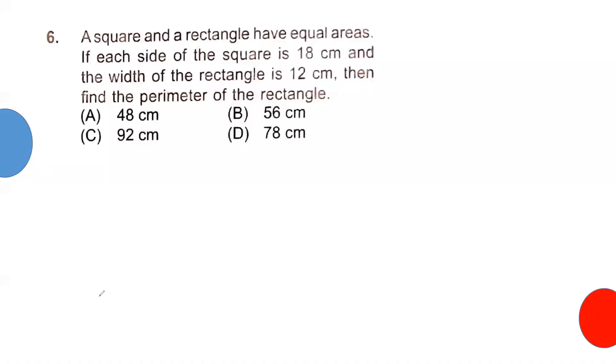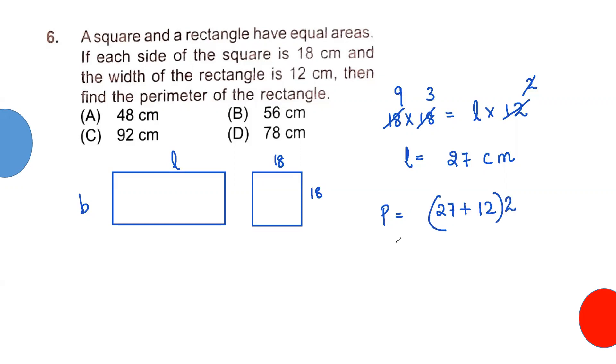See this question again. Here we have a rectangle and a square with equal area. That means 18 times 18 is the area of the square. Suppose this is L, this is B. Width is given as 12. So let's take it 12 and then find L. L will be 6 times 3 after cancelling - we got 27 centimeter. So perimeter is 27 plus 12 times 2. Perimeter will be 2 times 39, that is 78 centimeter. So here goes the answer.